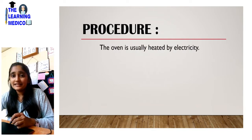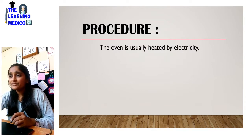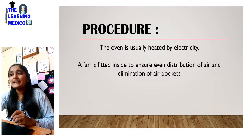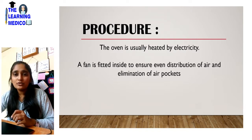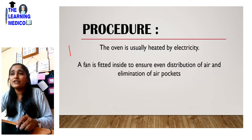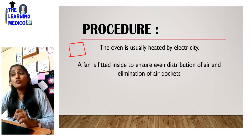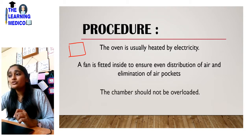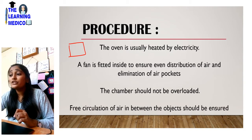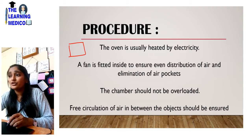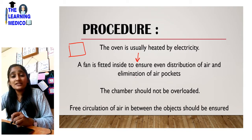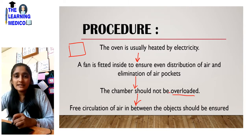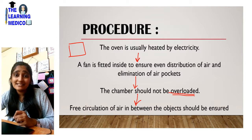The oven is usually electrically heated. A fan is fitted inside to ensure even distribution of air and elimination of air pockets in the chamber. The fan ensures that heat is equally spread in the chamber, and the chamber should not be overloaded — free circulation of air between objects should be ensured.